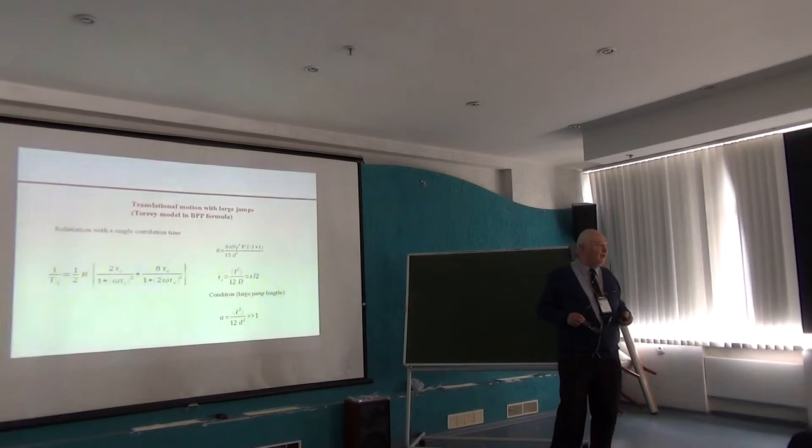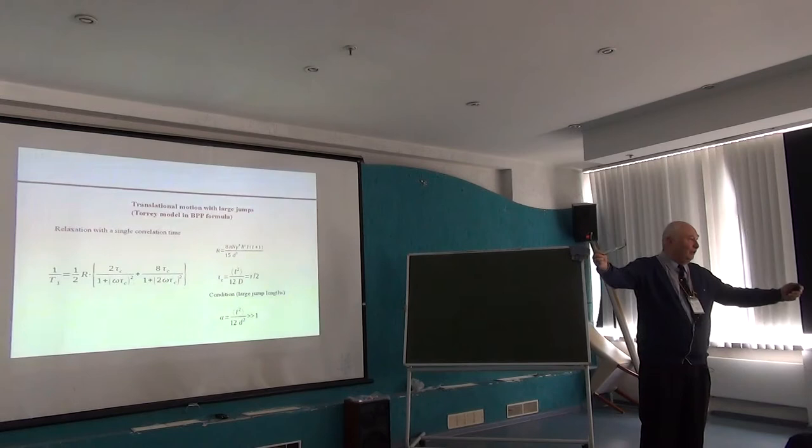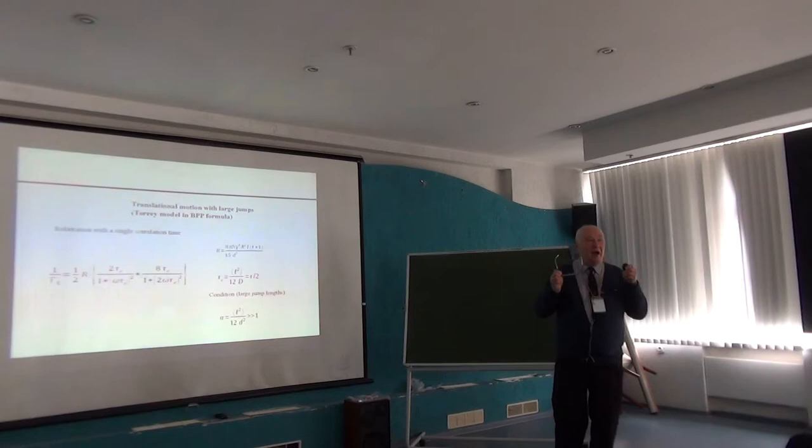The lattice model means you have a certain lifetime of the molecule at a certain site, and then a flight time of the molecule relatively short with respect to the lifetime. Normally this is forgotten because people always use the Debye-like diffusion model, which cannot apply to this jump-like motion — therefore called the lattice model. The simple result is that you have a spectral density function which contains only one correlation time — a single correlation time. This is different from the Debye model, where you have a distribution of correlation times.